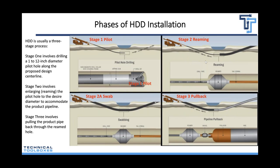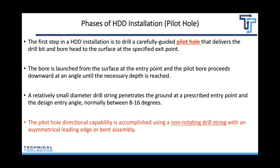Now let's talk about the phases of HDD installation. It's usually a three-stage process — 95% of the time. Stage one is the pilot hole, stage two is the reaming (which sometimes includes a swab pass), and stage three is the pullback. We'll cover each of those in a bit of detail.